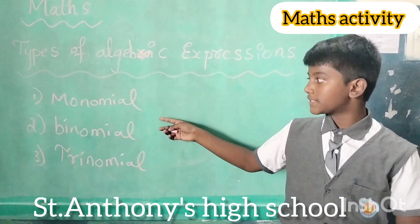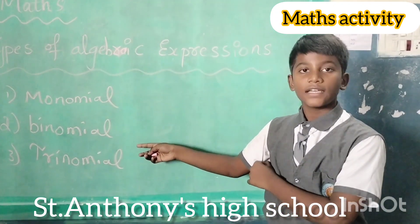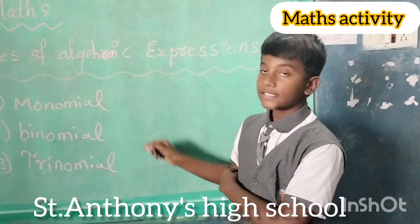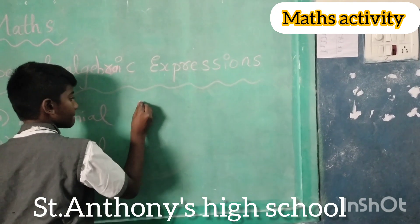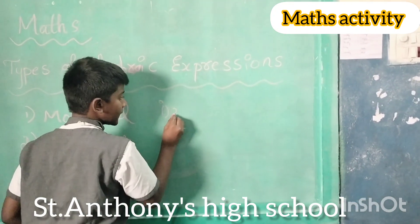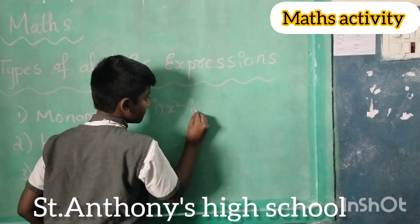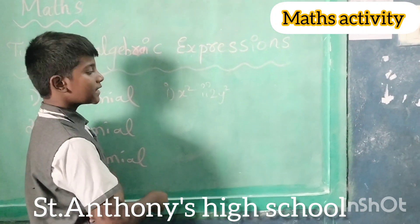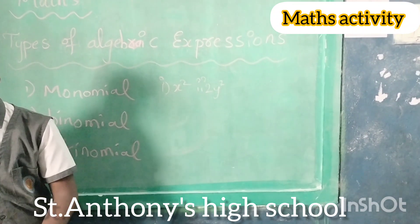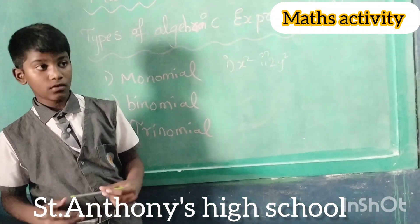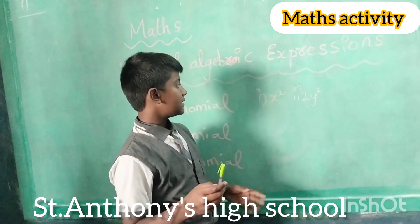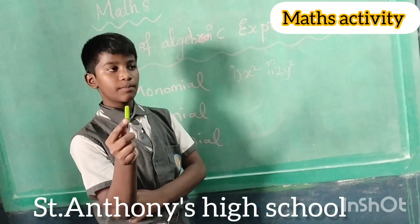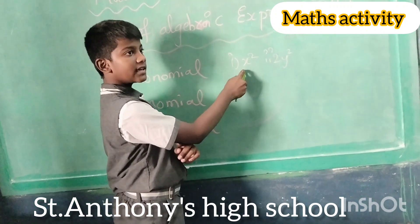The first one is Monomial, the second one is Binomial, and the third one is Trinomial. The first one: Monomial is nothing but a single like term. Examples: X square and 2Y square. Single like term. Just like this 12 — this is only a single value.